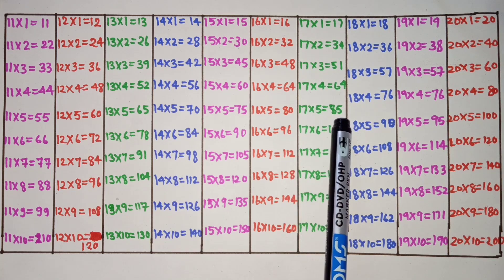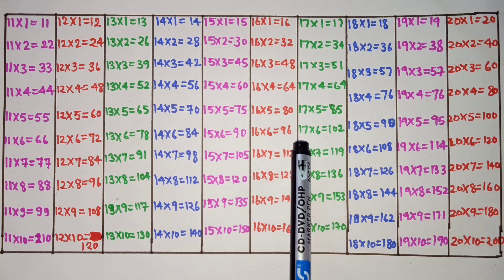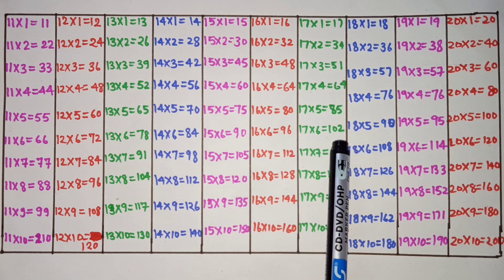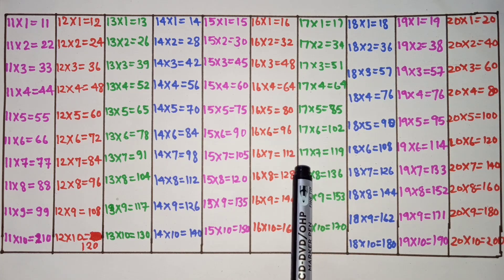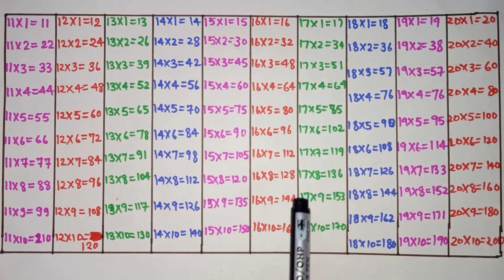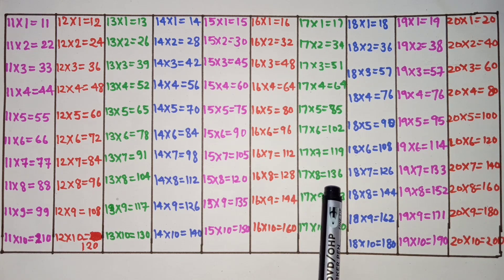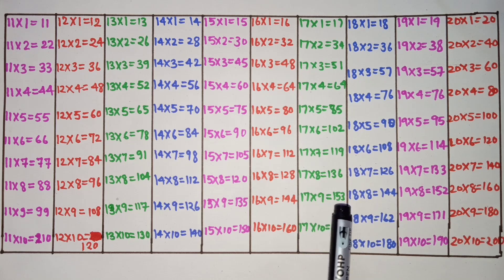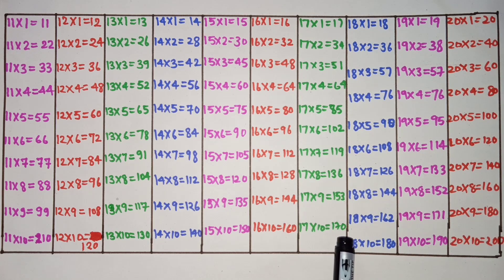17 6s are 102, 17 7s are 119, 17 8s are 136, 17 9s are 153, 17 10s are 170.